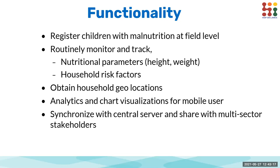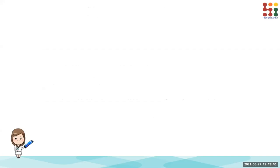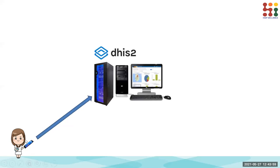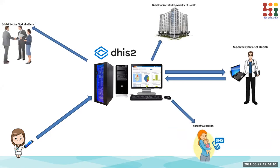The broad set of requirements that came up: mostly they wanted to identify and register children who are having nutrition problems, monitor their parameters — mainly height and weight — in the field, and also identify household risk factors contributing to the issue. Our field health worker, who we call the public health midwife, does community visits and identifies children with nutrition issues by weighing them. We wanted her to capture information on a mobile device, which is then transmitted into the central DHIS2-based solution and shared with other stakeholders.